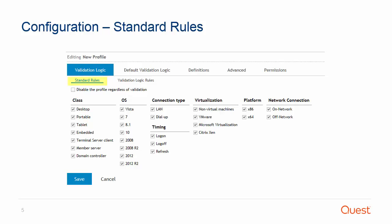To configure validation logic, use the boxes on the Standard Rules tab to define the specific rules for class, operating systems, connection types, timing, virtualization, platform, and network connection that the profile or element will apply to. Also on this tab is a checkbox to disable the profile regardless of validation, or disable this element, depending on the location. Use this checkbox to temporarily disable the selected configuration from executing. Clearing the box will re-enable the configuration setting.